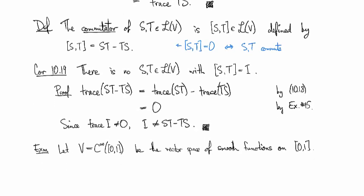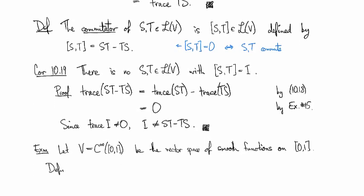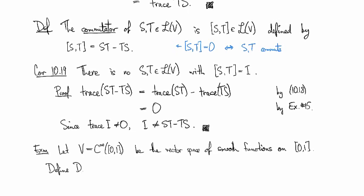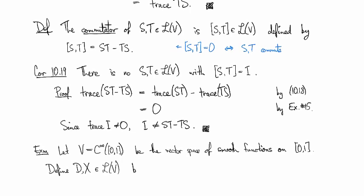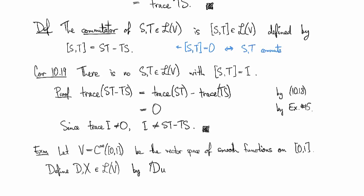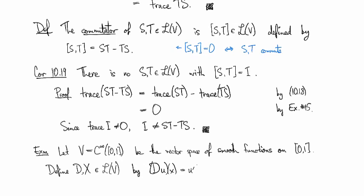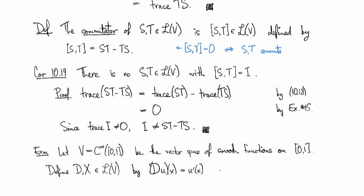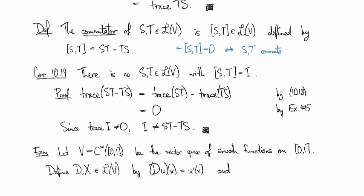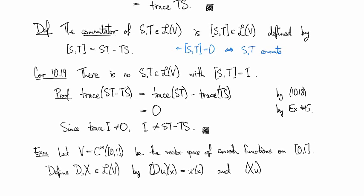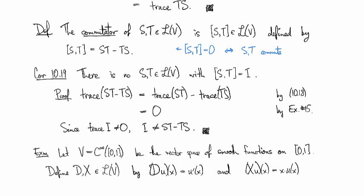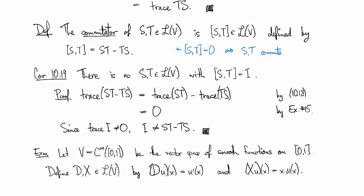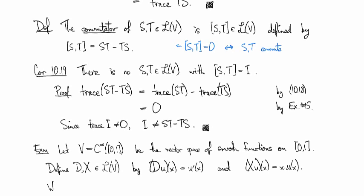And let's define a couple of operators. We'll define D and X operators on this space, and D is going to be the derivative. So D(u) at x is just going to be given by u prime of x. And X is going to be multiplication by the identity function. So X(u) at a point x is just going to be the independent variable x times u(x).